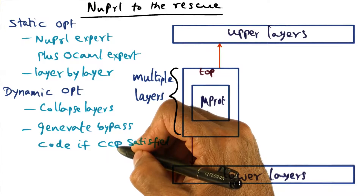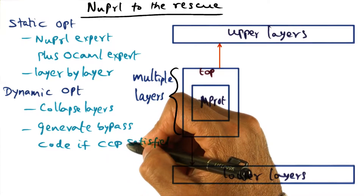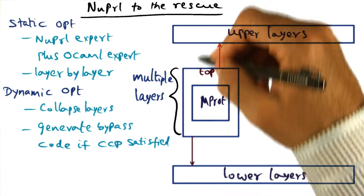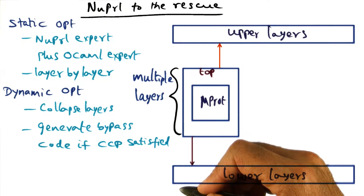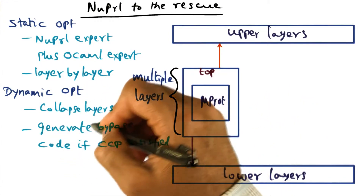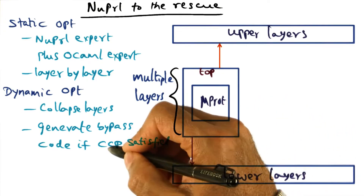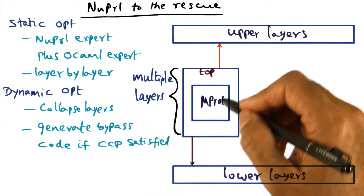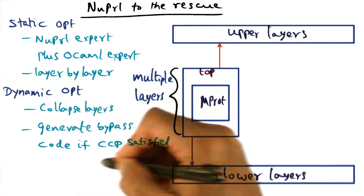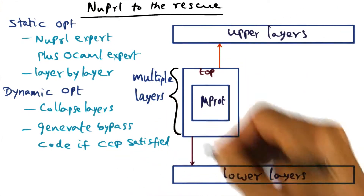Once these common case predicates have been synthesized, if the common case predicate is satisfied, then you don't have to go through all the cruft indicated by the multiple layers of micro protocols assembled on top of one another. Instead, we can do much simpler processing — that's what is called the bypass code. In dynamic optimization, once these common case predicates have been identified by looking at the conditional statements in the micro protocol, the dynamic optimization framework generates this bypass code and inserts it into the framework.